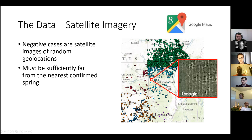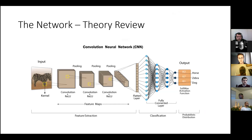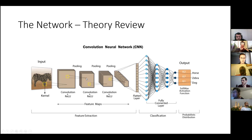To review the theory: a convolutional neural network takes an image, applies a kernel in a convolution/correlation operation, then pools, repeats, pools again, flattens, and feeds into a fully connected layer. This project uses a binary classifier, so there is just one output node instead of multiple classes.